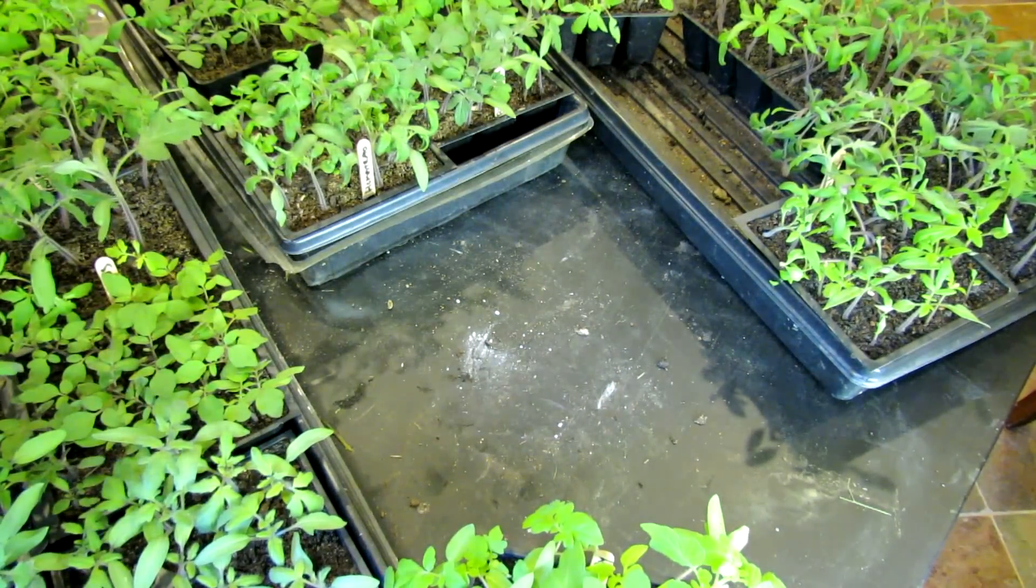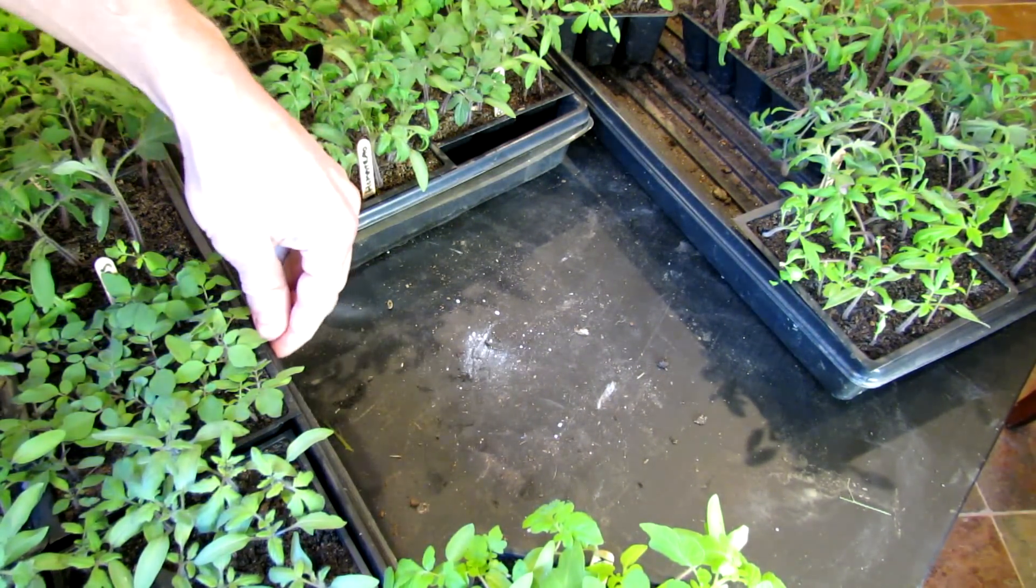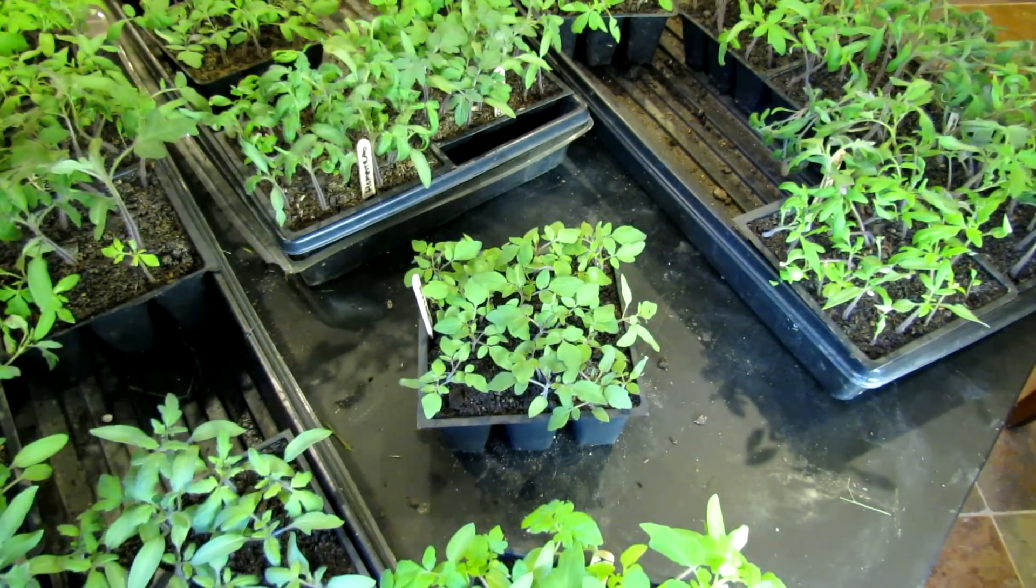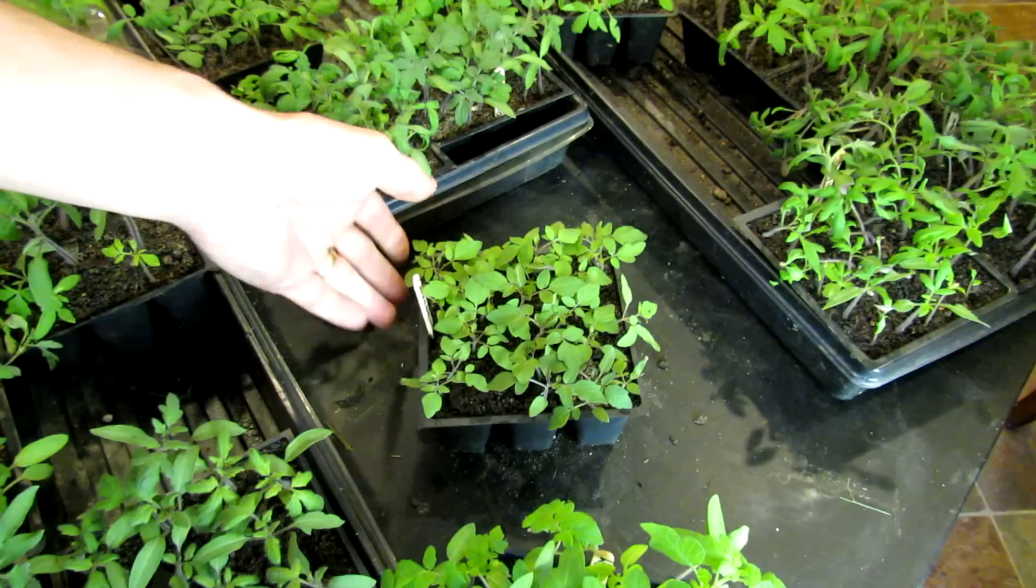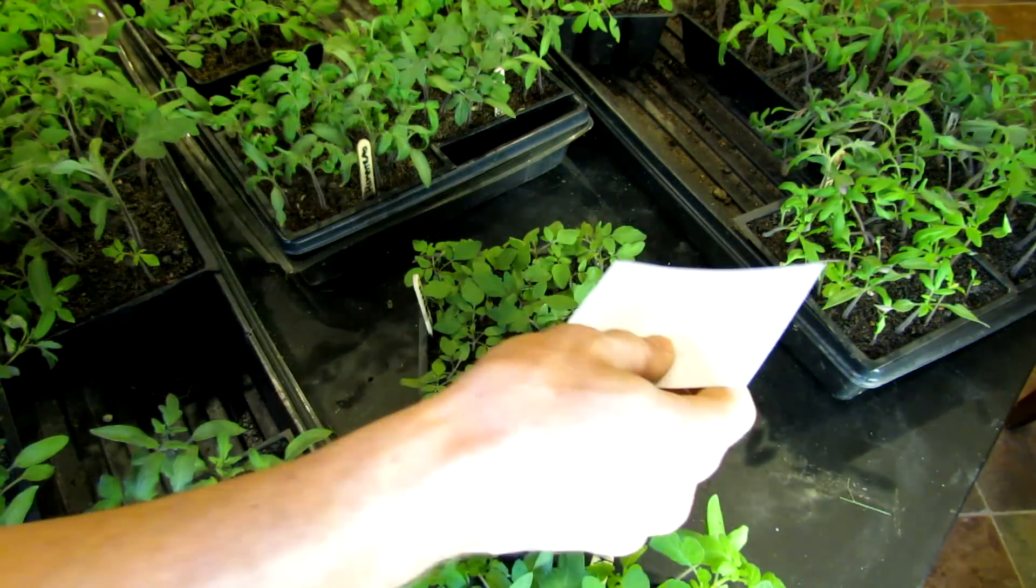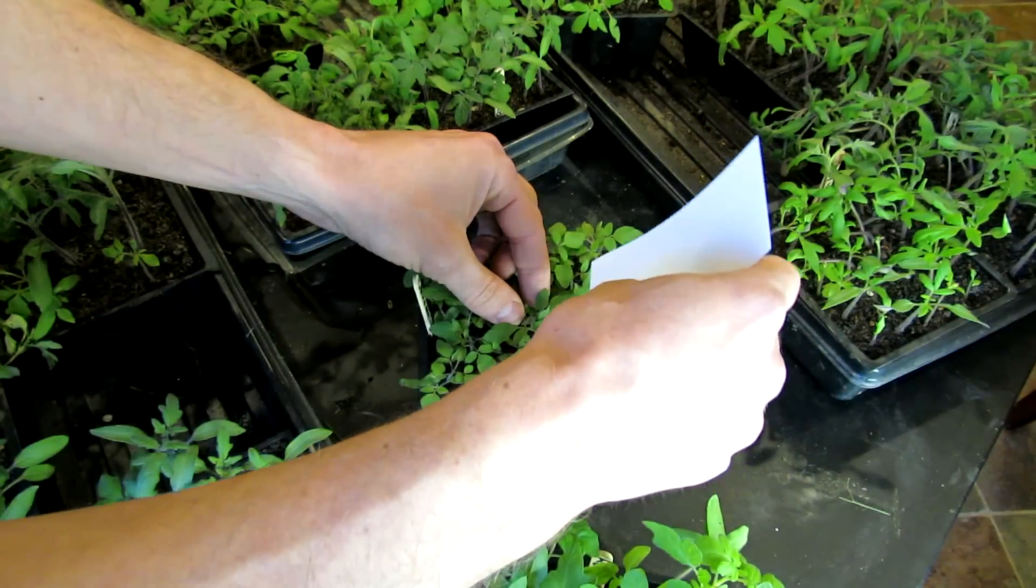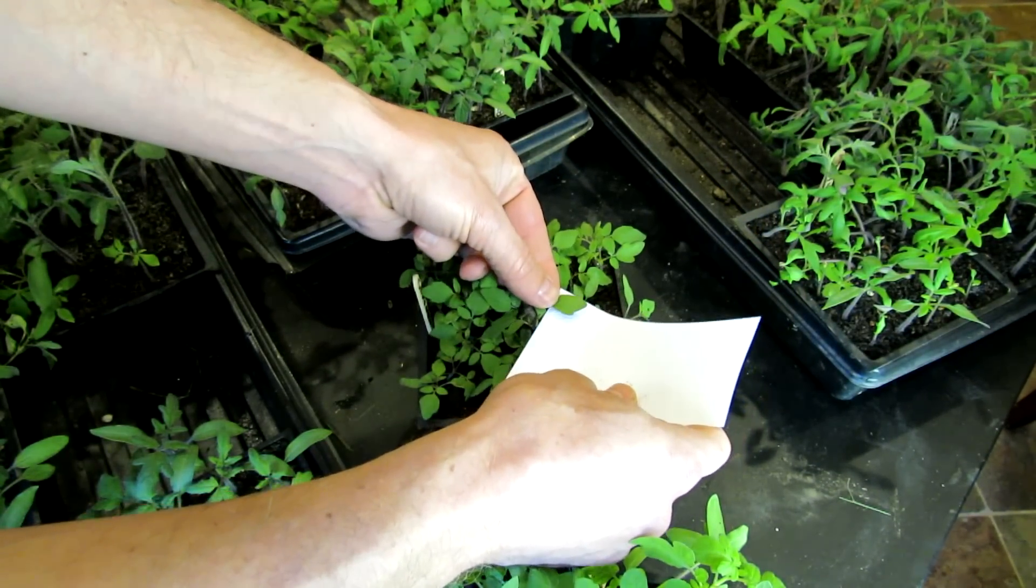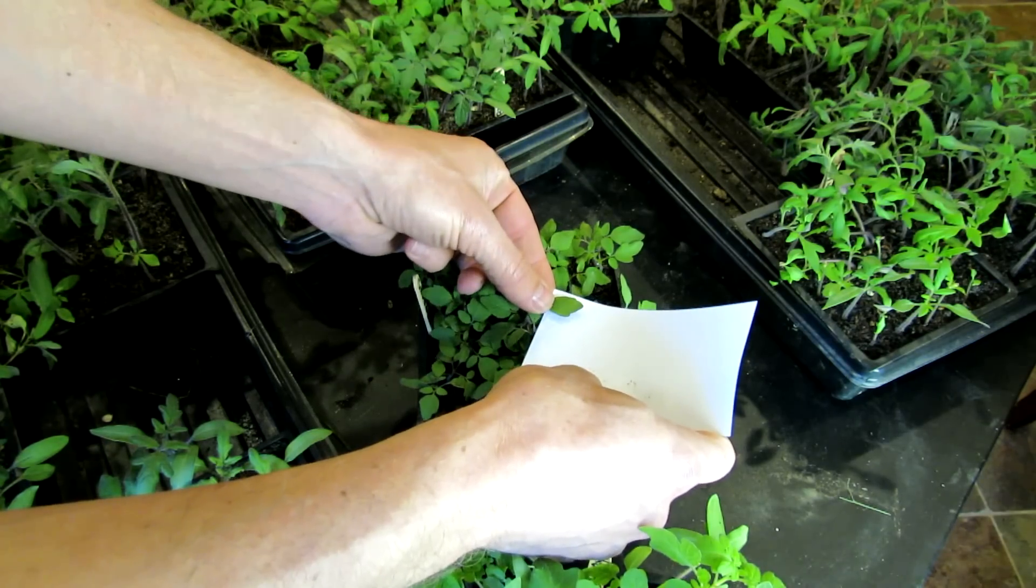And then sometimes you get a mix between the potato leaf and the standard leaf. This variety is Sarah's Galapagos Island. And when you look at it, it almost looks like a potato leaf, but there are a few scallops in it.